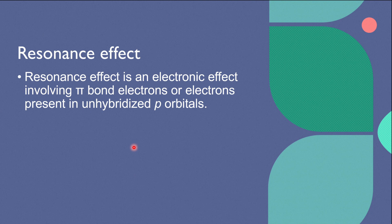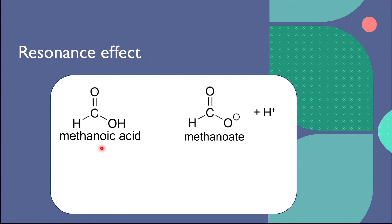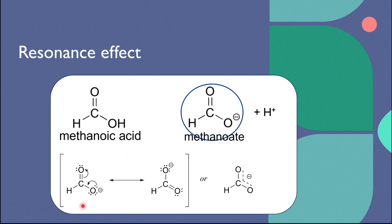Resonance effect is an electronic effect involving pi bond electrons or electrons present in unhybridized p orbitals. As an example of resonance structure, let's take a look at the methanoid ion, which is the conjugate base of methanoid acid. Usually you see it drawn with a negative formal charge located on the single-bonded oxygen. In reality, methanoid ion has two resonance structures and they are alternating, so the two carbon-oxygen bonds are of the same length. Although there is indeed an overall negative formal charge on the group, it is shared equally between the two oxygens — the negative charge of the anion is dispersed, and the structure of the ion is stabilized by resonance. The more stabilized the conjugate base, the stronger the acid, and the equilibrium lies further to the right.